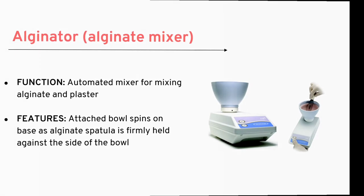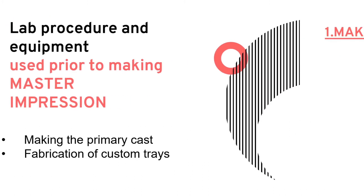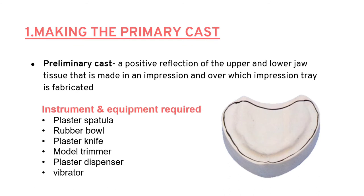Once the primary impression is made, we need to perform some lab procedures prior to making the master impression. This involves making a primary cast and fabricating a custom tray. The preliminary cast is defined as a positive reflection of the upper and lower jaw tissue made from an impression, over which the impression tray is fabricated. Equipment required includes a plaster spatula, rubber bowl, plaster knife, model trimmer, plaster dispenser, and vibrator.